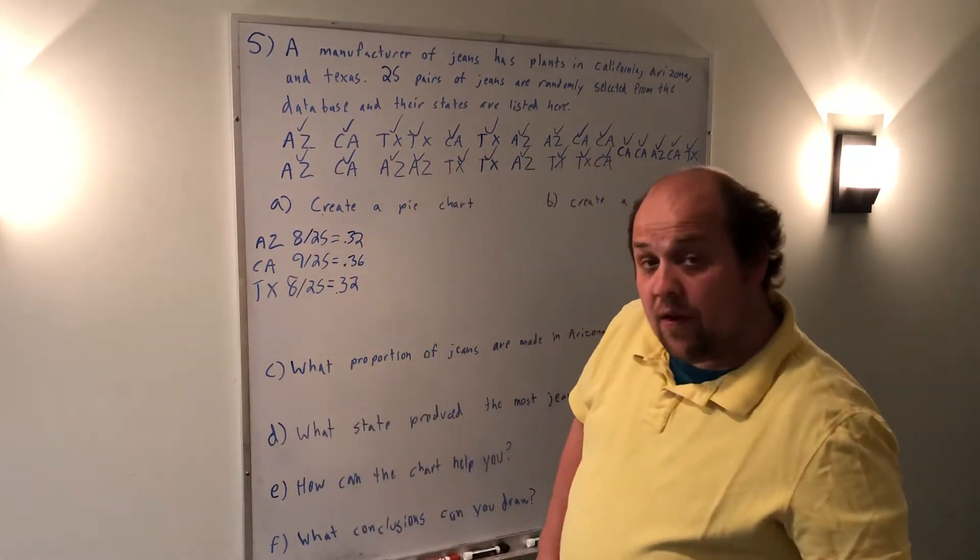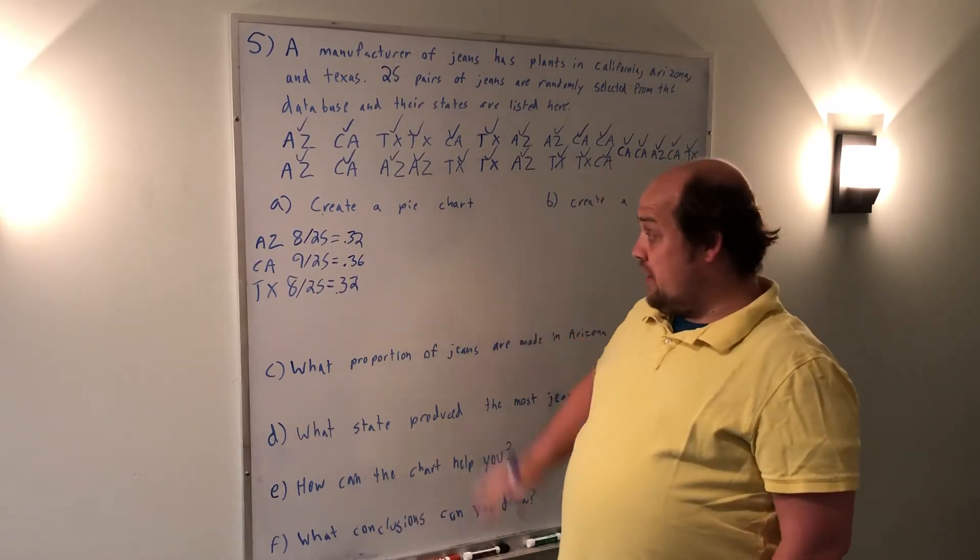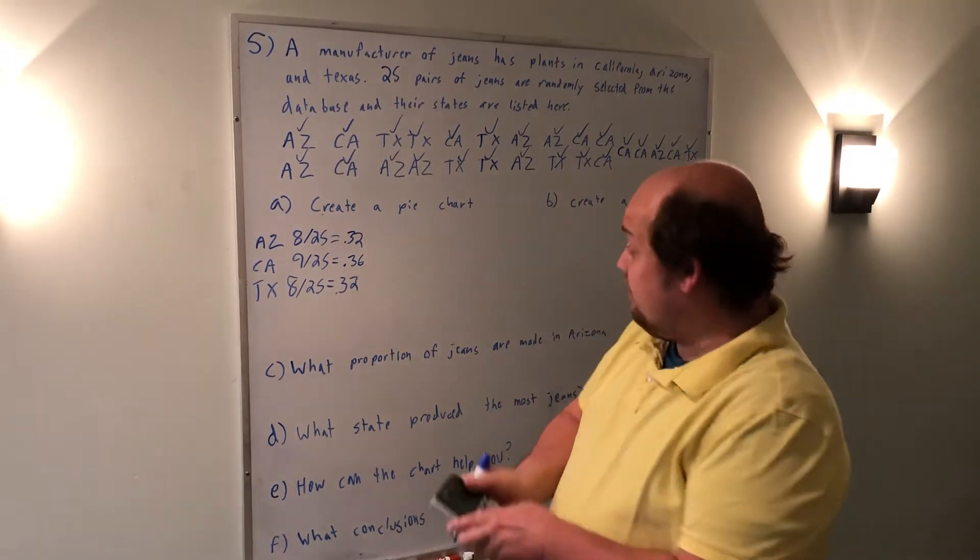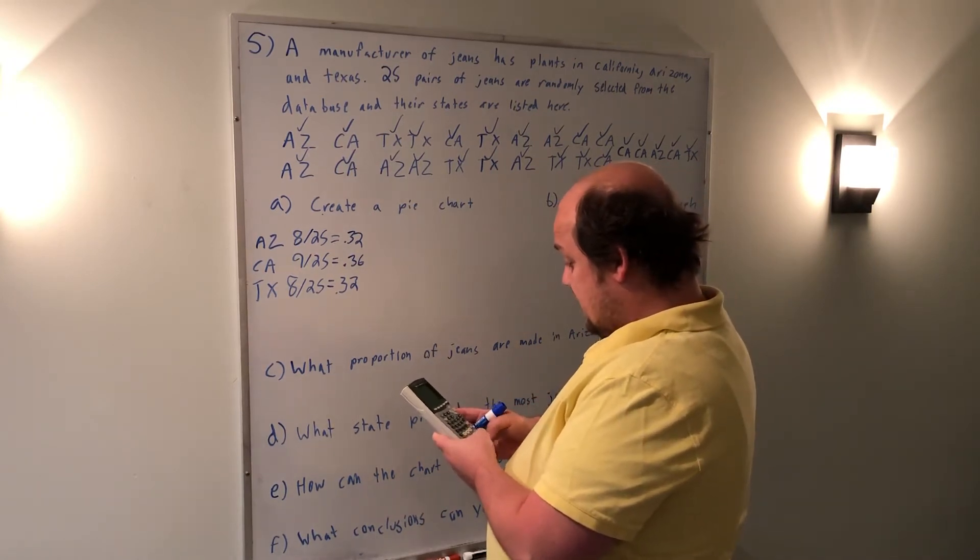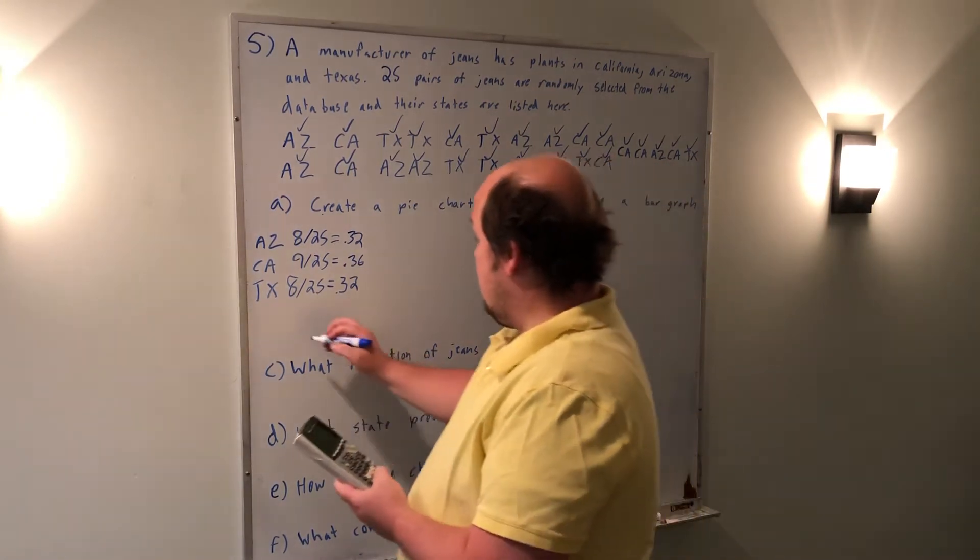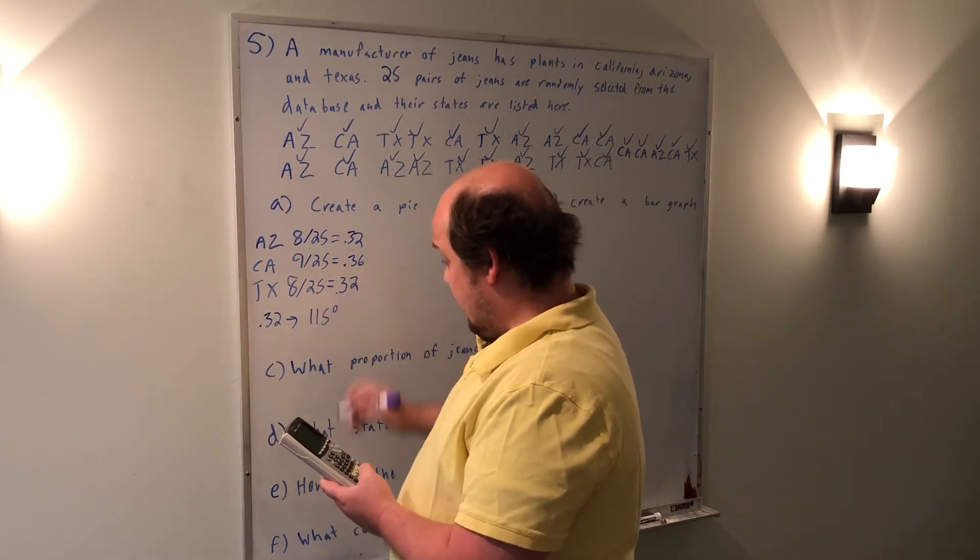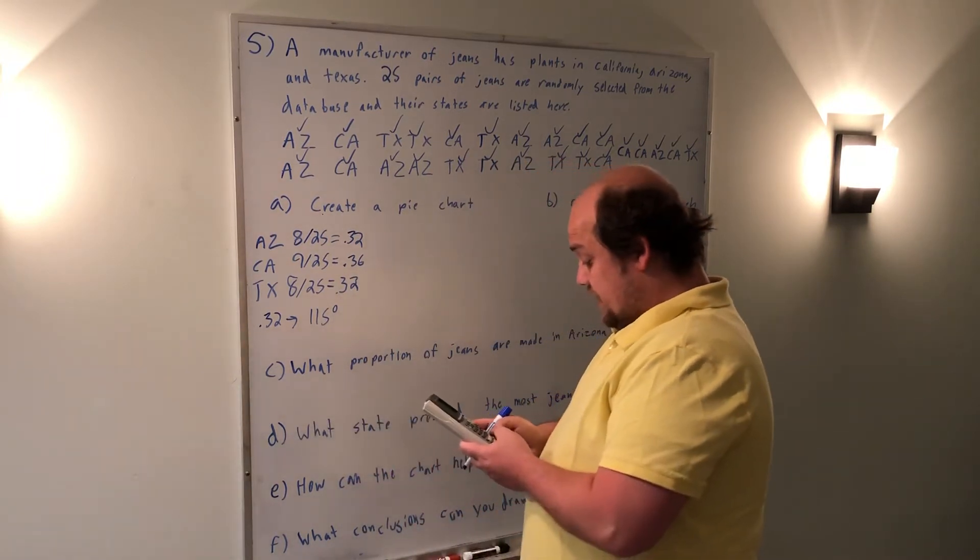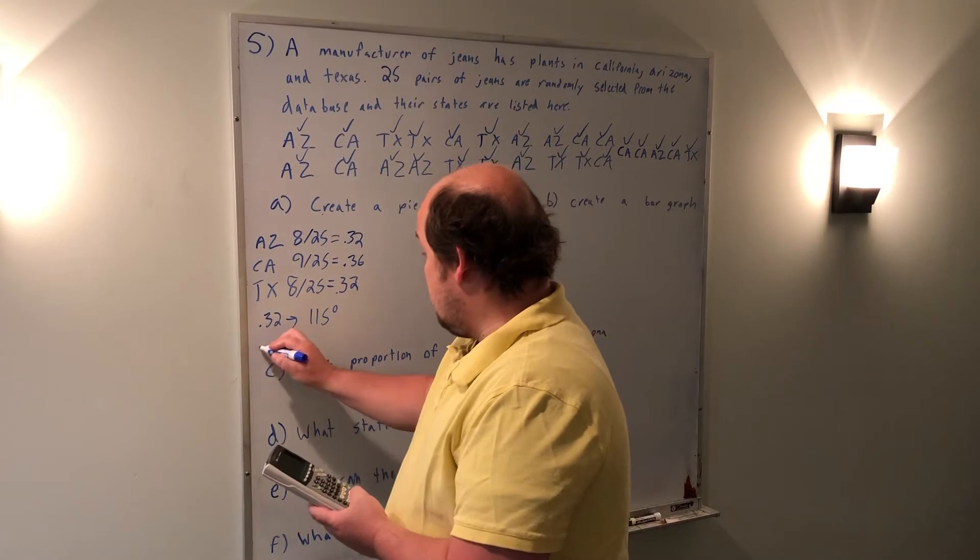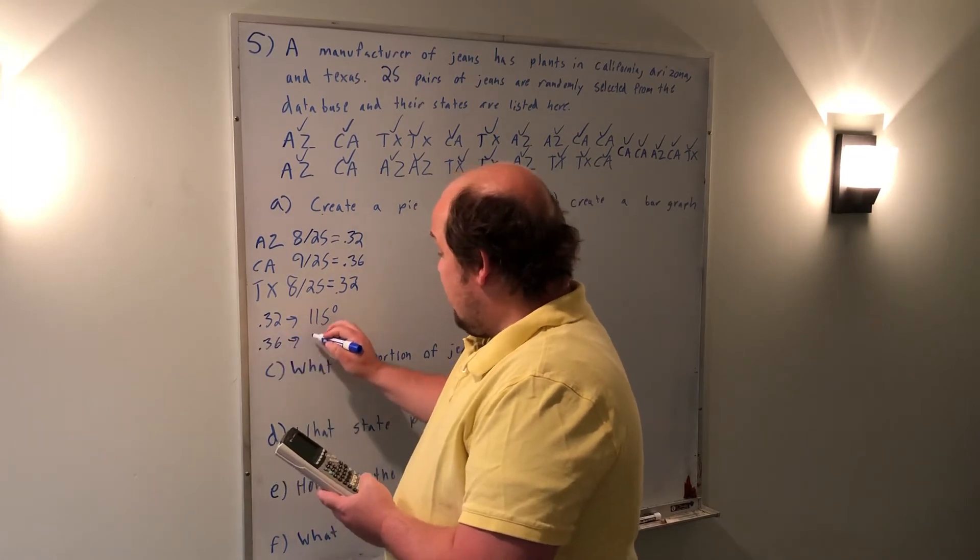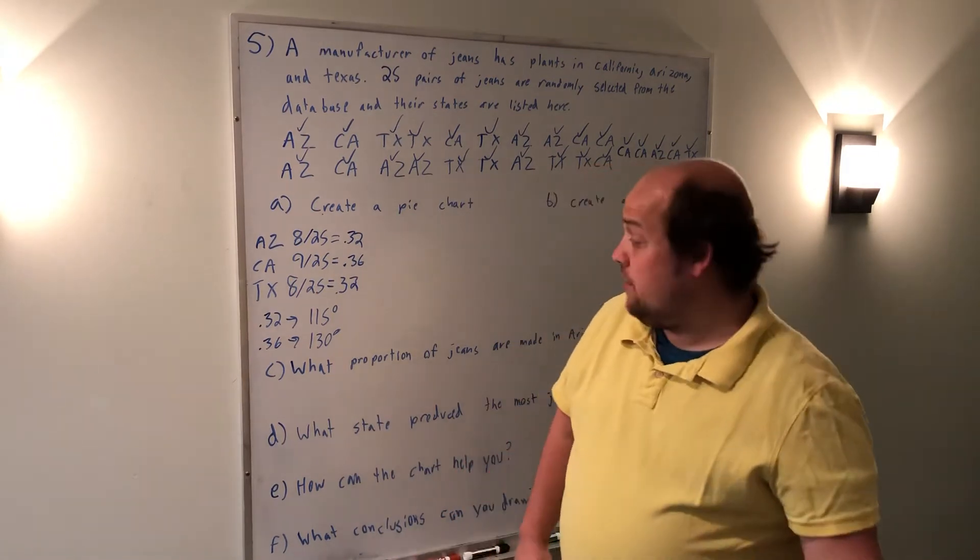So if I wanted to use a protractor and get these to exact, what should they be in a circle? I could multiply by 360. 0.32 times 360 tells me that 0.32 means 115 degree angle. 0.36 times 360 gives me about a 130 degree angle. Those are both slightly rounded.